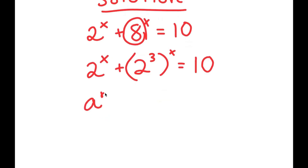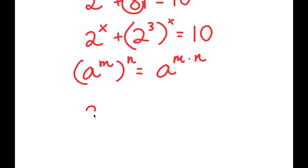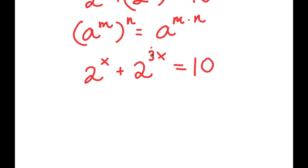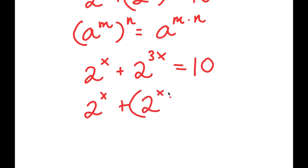Now, if I have something in the form a to the power of m to the power of n, this is equal to a to the power of m times n. So 2 to the power of x plus 2 to the power of 3 to the power of x — that's the same thing as 2 to the power of 3x. And now this is equal to 10. I can rewrite this as 2 to the power of x, to the power of 3, is equal to 10.